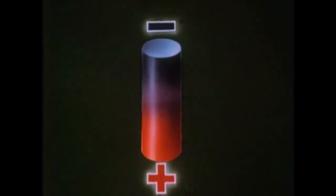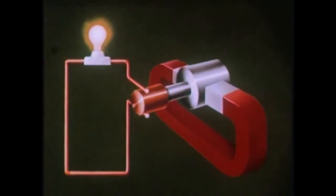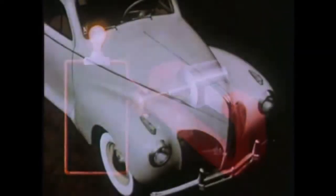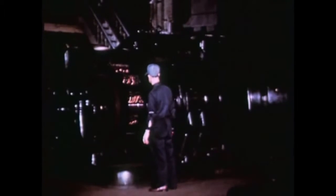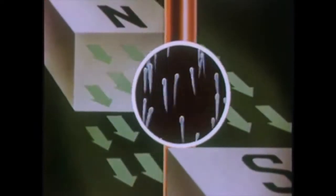We now have two charged terminals capable of producing a continuous flow of electric current, just as we had in the cell. This is accomplished in practice by providing a means of continuing the movement of a conductor within a magnetic field. In all electromagnetic generators, regardless of size, the same principle is used to generate electricity: the deflection of electrons in a conductor moving across a magnetic field.